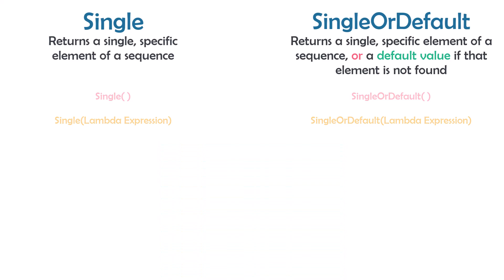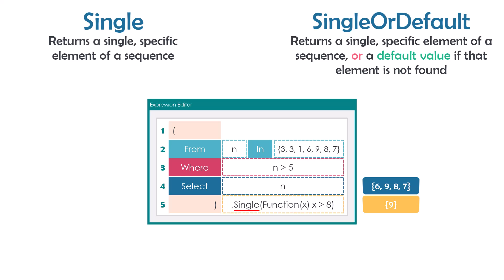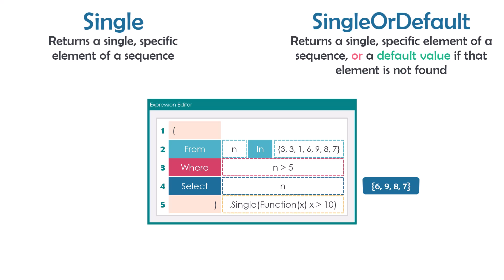Let's see how to use these operators with a lambda expression. I have an array of seven numbers and a condition to get only the numbers greater than five, resulting in a collection of four numbers. Using Single with a condition to get numbers greater than eight returns a collection with only one number, so I get that number as output. Changing the condition to numbers greater than ten gives an empty result, so Single throws an InvalidOperationException, while SingleOrDefault returns zero as the default value.